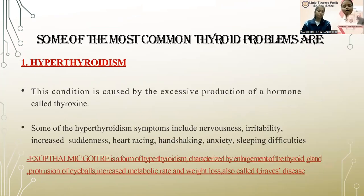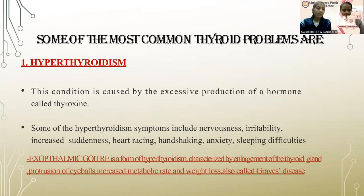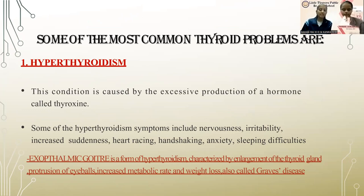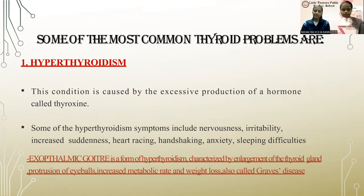Some of the most common thyroid problems are: Hyperthyroidism — this condition is caused by the excessive production and secretion of thyroid hormone. Symptoms include nervousness, irritability, increased sweating, heart racing, hand shaking, anxiety and sleeping difficulties. Exophthalmic goiter, which is a form of hyperthyroidism, is characterized by enlargement of the thyroid gland, protrusion of the eyeballs, increased metabolic rate and weight loss; this is commonly called Graves' disease.